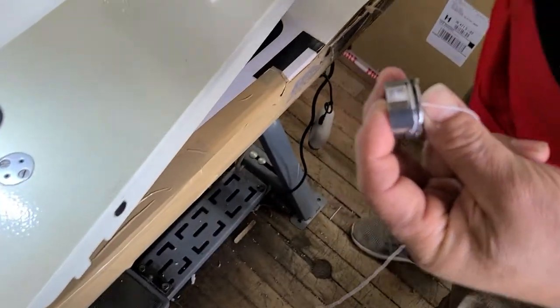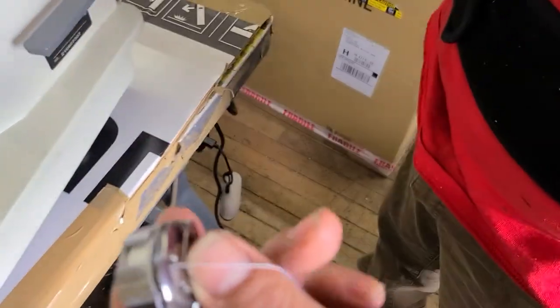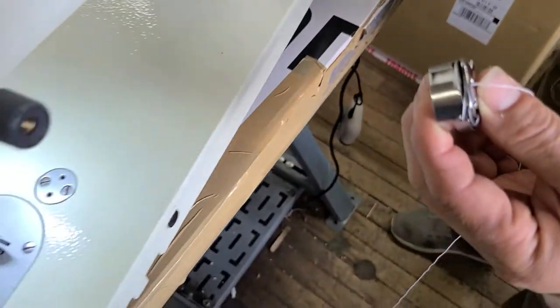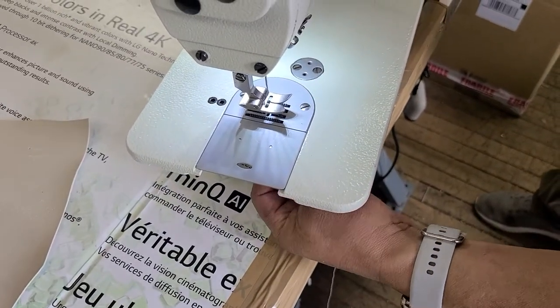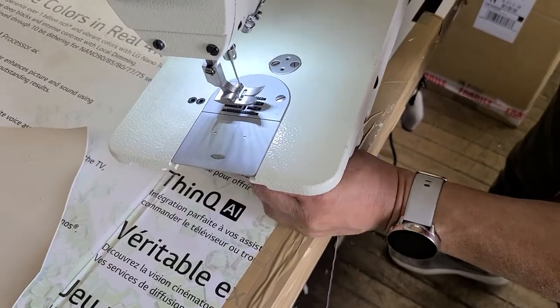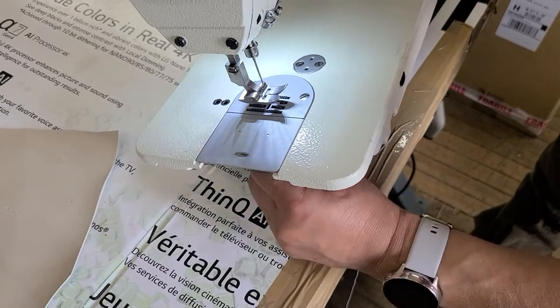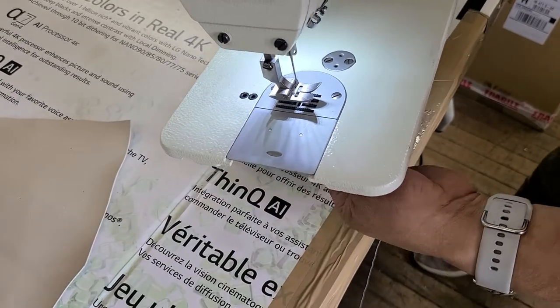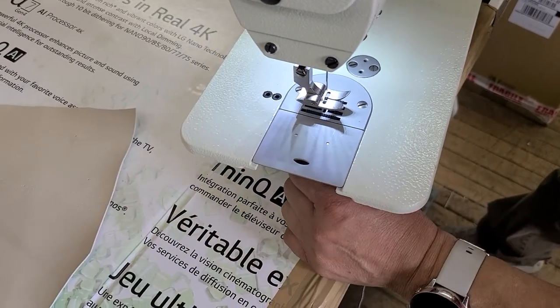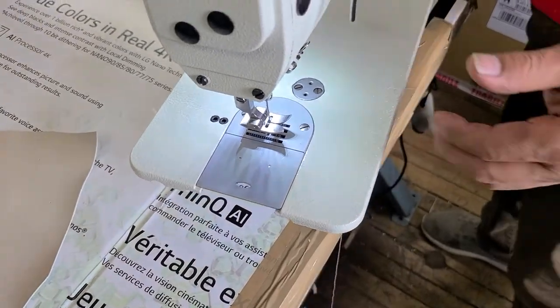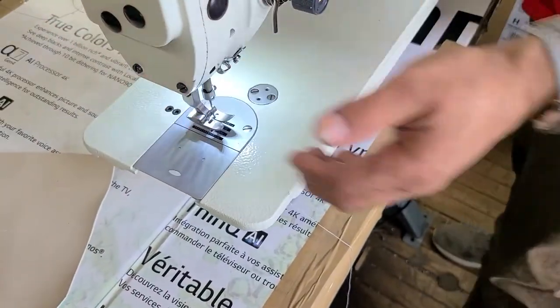Okay, and so when we put that bobbin case back, you see the way Jose is holding this? You don't want to hold the clip, you want to hold it just like Jose is. And then you're just going to feel below. You're going to get it in there and we're going to make sure that we hear a nice click. We have to turn the hand wheel on this one a little bit. There you go. So you see how he had to turn the hand wheel a little bit to get that bobbin case in.